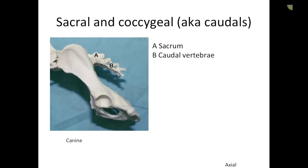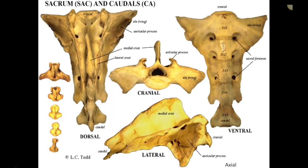The sacral and coccygeal vertebrae — also called caudal vertebrae, though I prefer the term coccygeal. The sacrum is made up of various sacral vertebrae that are fused together to create one big bone plate. In mammals the sacrum is fused. As you get down toward the tail, the coccygeal vertebrae vary in number depending on the breed, whether the tail has been docked, or whether the breed was born without a long tail.